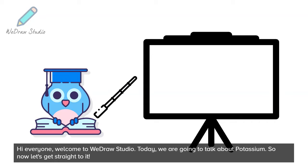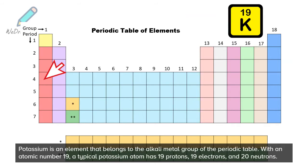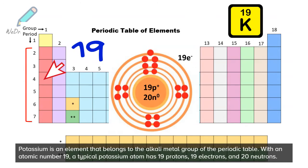Hi everyone, welcome to WeeDraw Studio. Today we are going to talk about potassium. Potassium is an element that belongs to the alkali metal group of the periodic table, with an atomic number of 19. A typical potassium atom has 19 protons, 19 electrons, and 20 neutrons.